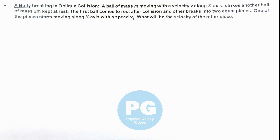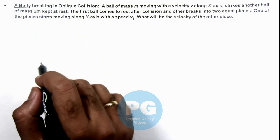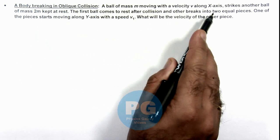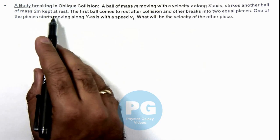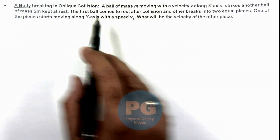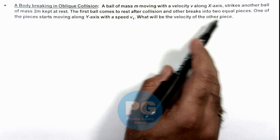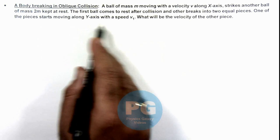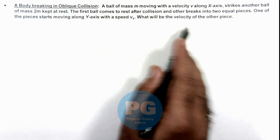In this illustration we'll analyze a body breaking in oblique collision. Here we are given that a ball of mass m moving with a velocity v along x-axis strikes another ball of mass 2m which is kept at rest. The first ball comes to rest after collision and the other breaks into two equal pieces. One of the pieces starts moving along y-axis with speed v1, so we are required to find the velocity of the other piece.